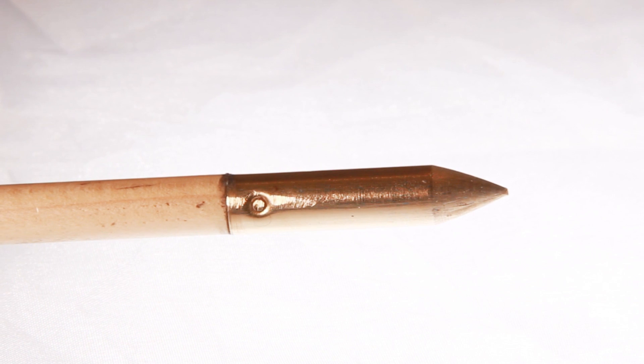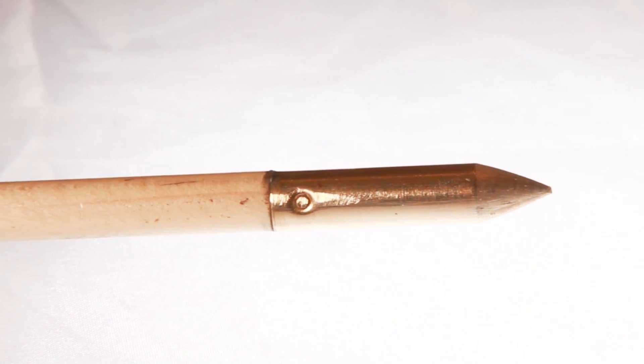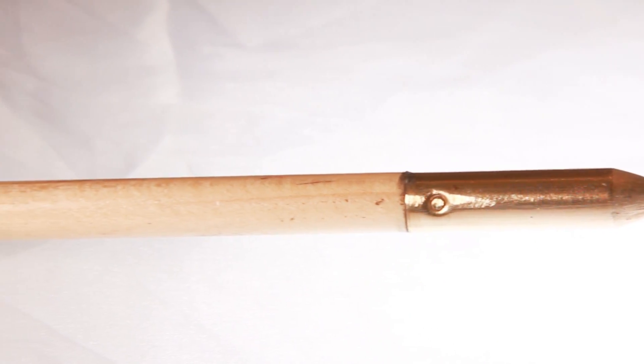At the other end we have the pile, commonly called the point or tip. It's the bit that hopefully sticks in the target and gives some weight to the front end of the arrow.